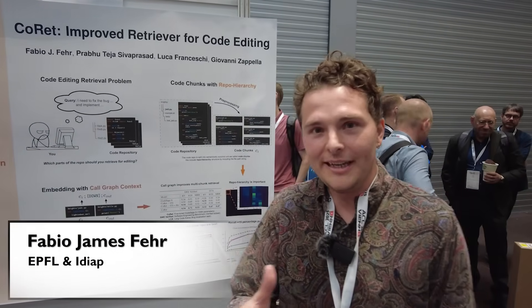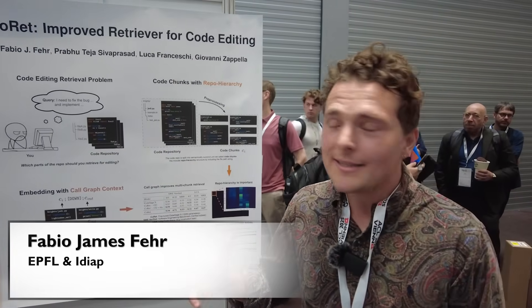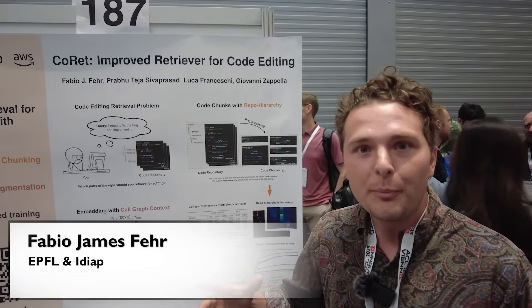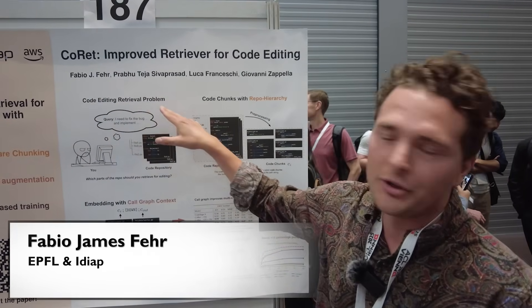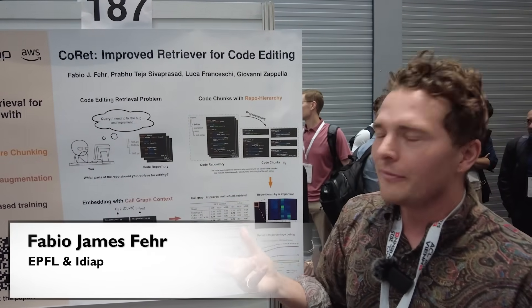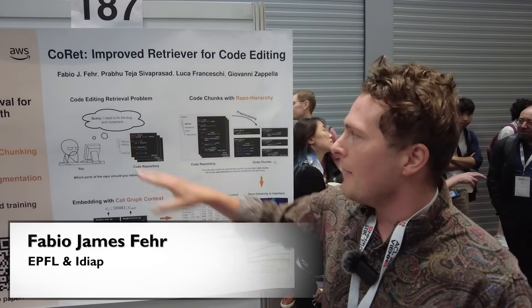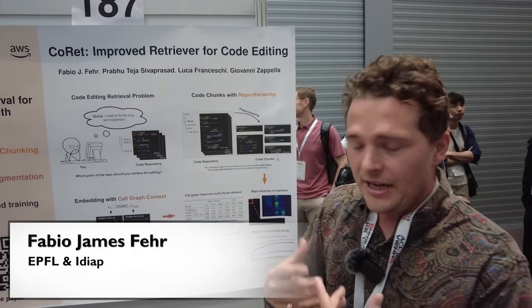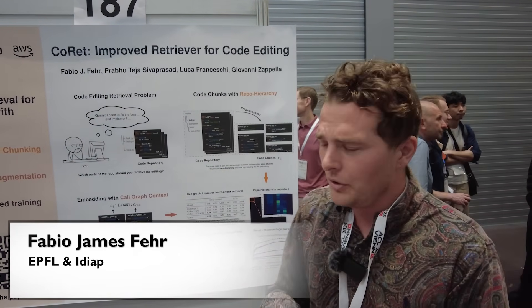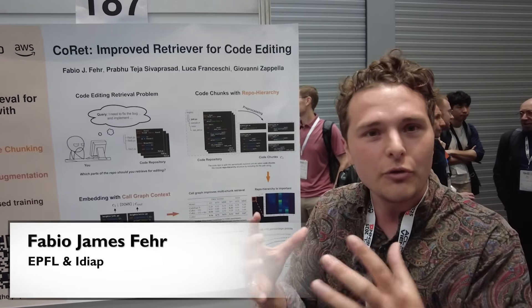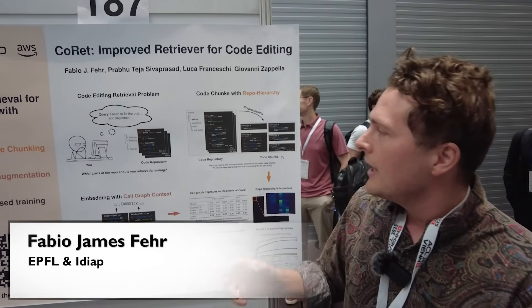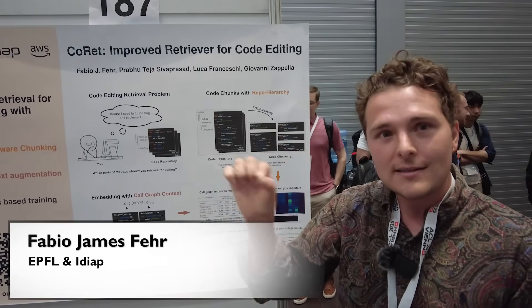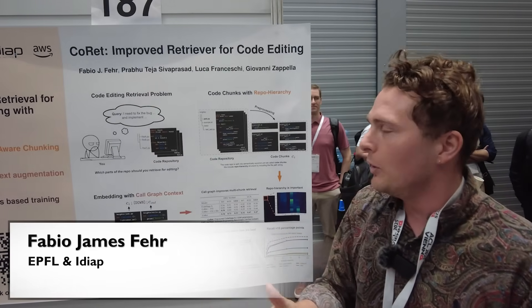I'm going to explain a little bit about this work, which is Coret, and it's about handling quite a challenging problem, which is code editing retrieval. Code editing retrieval is challenging because you have maybe a natural language problem — like 'I need to fix a bug,' or you've got this new repo and you're confused and you really want to find where the problem is — and then you've got an entire repo.